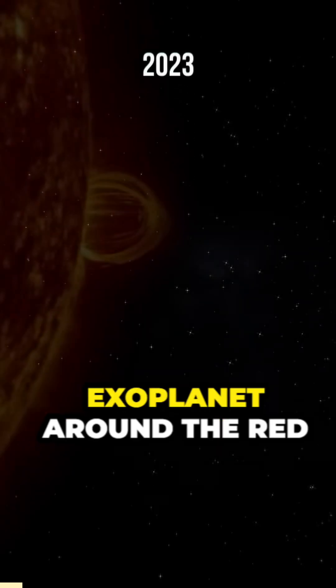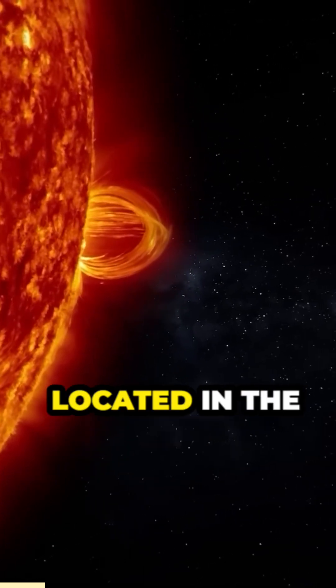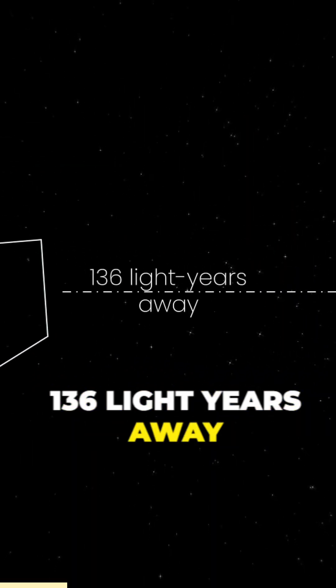In 2023, astronomers stumbled across an intriguing exoplanet around the Red Dwarf Star, TOI 715, located in the constellation of Volans, 136 light-years away from us.